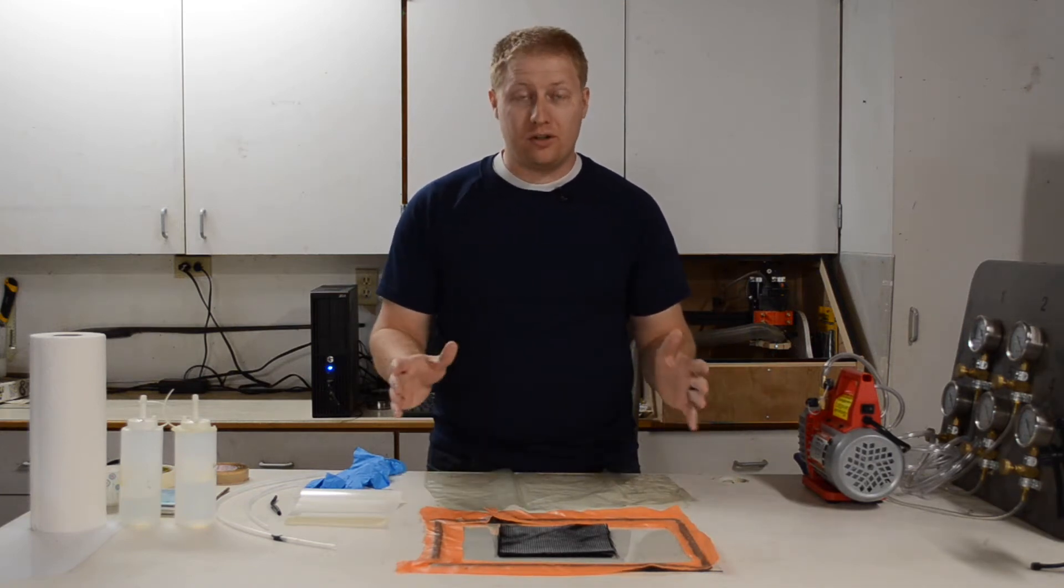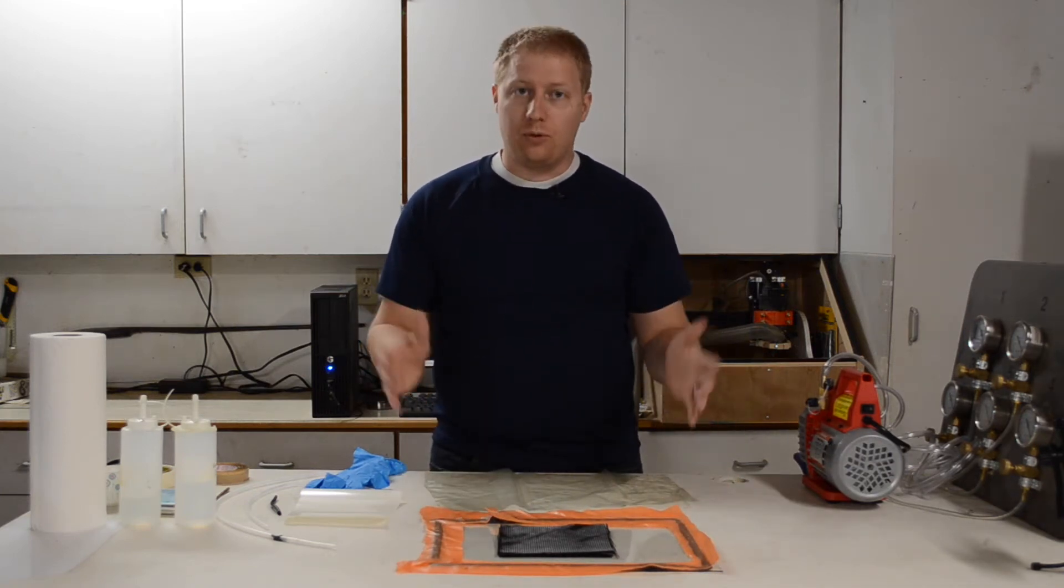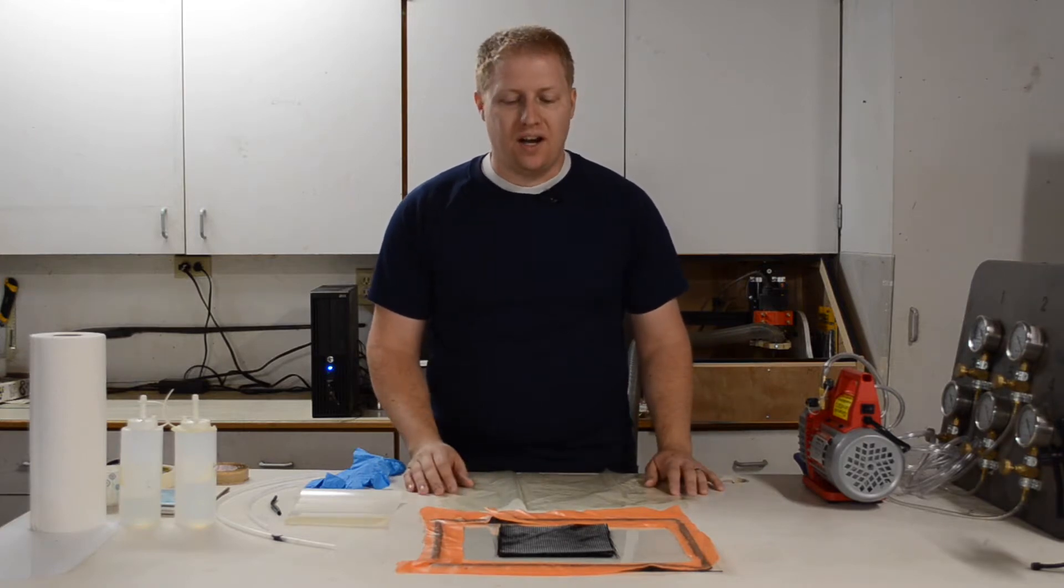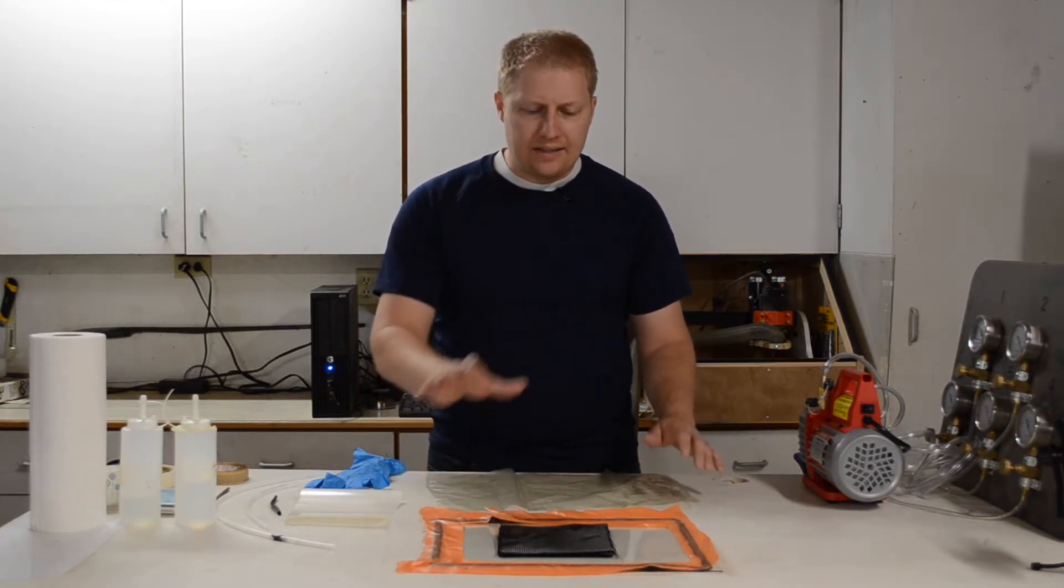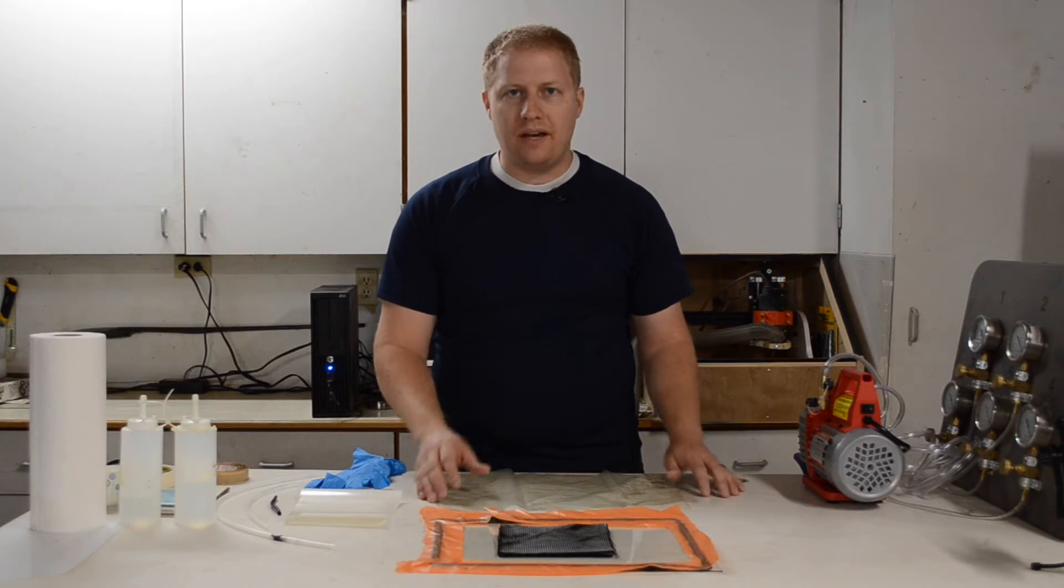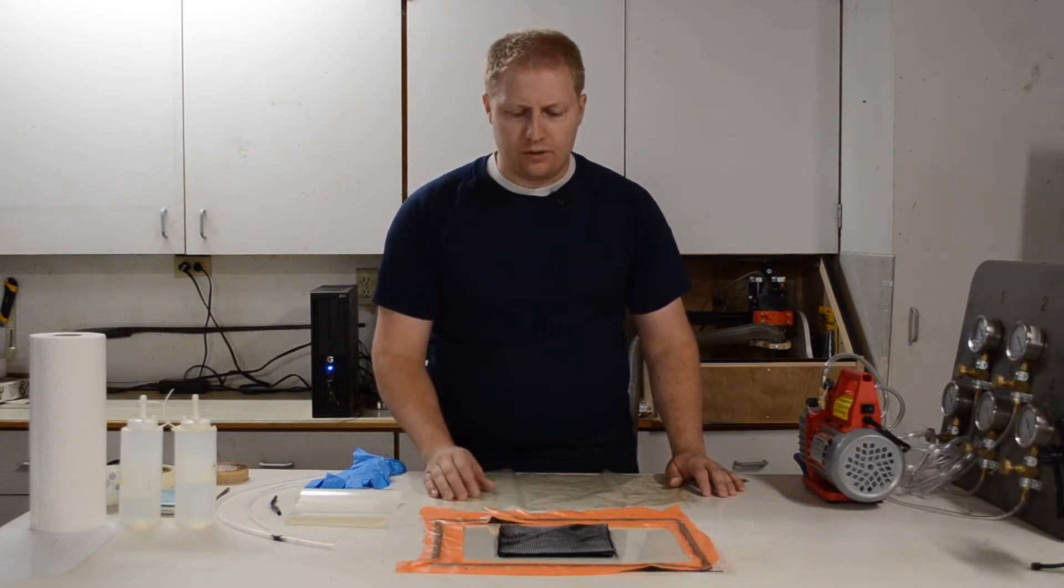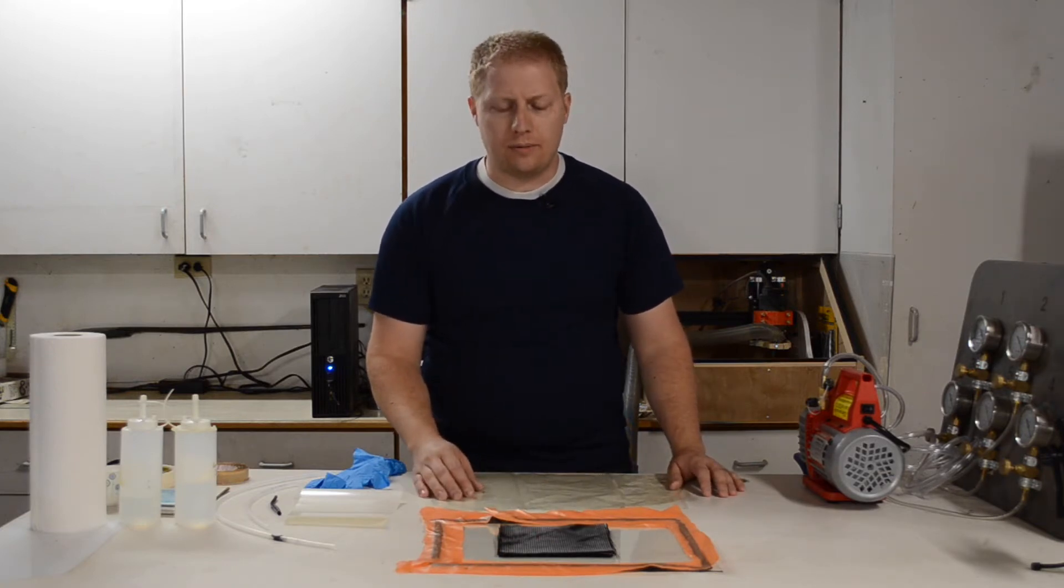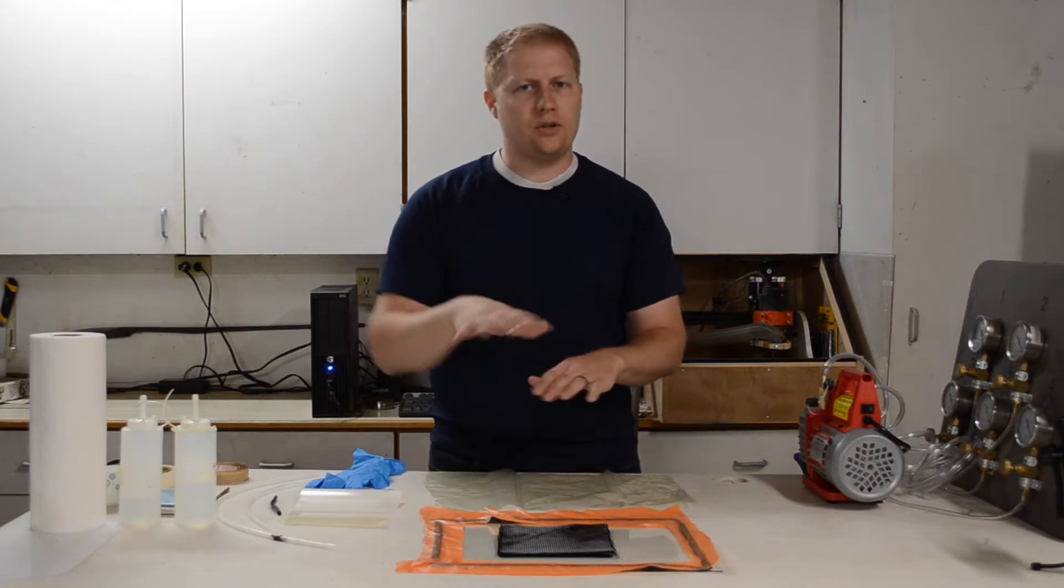I've gotten some feedback from some people, some pointers and tips that I'm hoping to implement and see how these work when we actually try this again. Same lamp as last time. It's seven plies of regular standard six ounce per square yard carbon. We're alternating 0, 90, and 45.